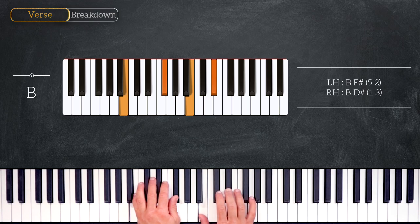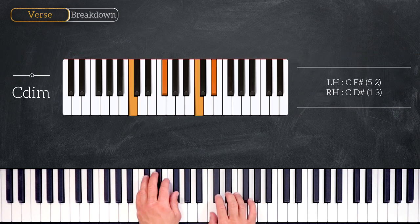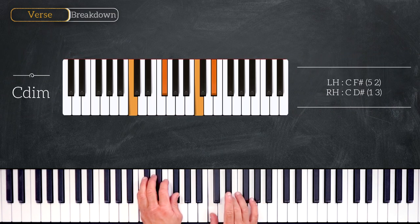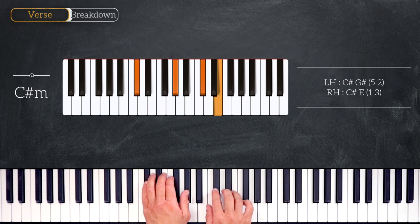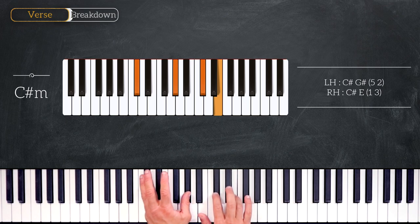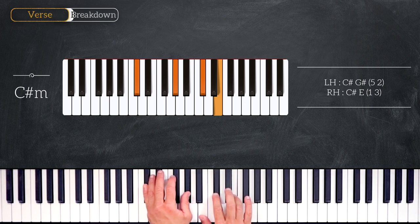Following this chord we are going to play a transition chord — a C diminished — with C and F# on the left hand, and C and D# on the right. This leads us to the second degree where we play a C# minor chord, with C# and G# on the left hand and C# and E on the right hand.